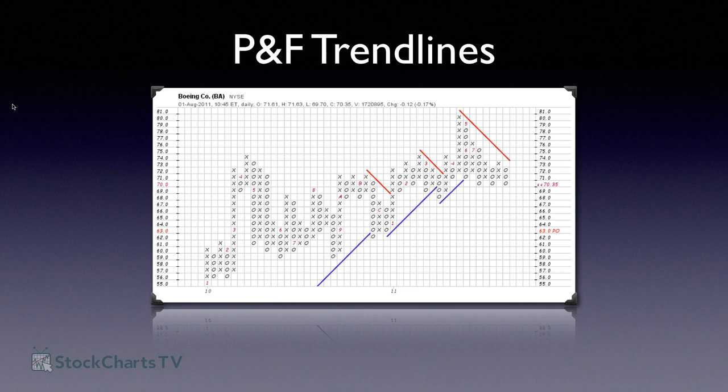Q: Richard asks why there's no 'A' for October in the PnF chart for the INDU symbol — it goes from 9 directly to B. A: In order for a month letter to appear, there has to have been a change — new X's or O's added — during that month. My strong suspicion is that for those settings, there wasn't enough volatility in October to add any boxes, so the chart went straight from 9 to B.